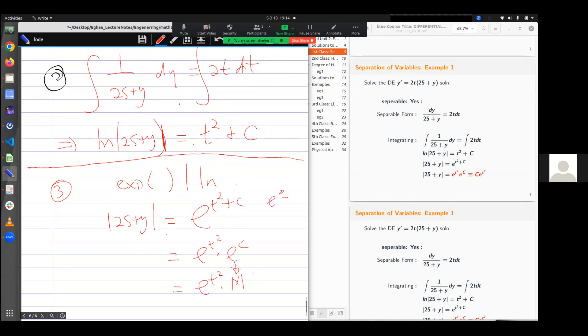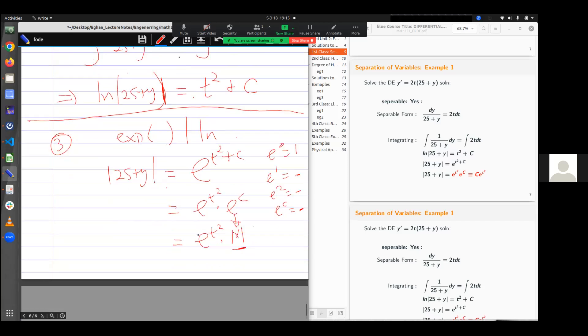I can then still write this as e^(t²) times another constant m. Why? Because e^0 is 1, e^1 is some number, e^2 is some number. And so e to the nth number will still be a number. And that is represented as m. So I have 25 + y equals to that.